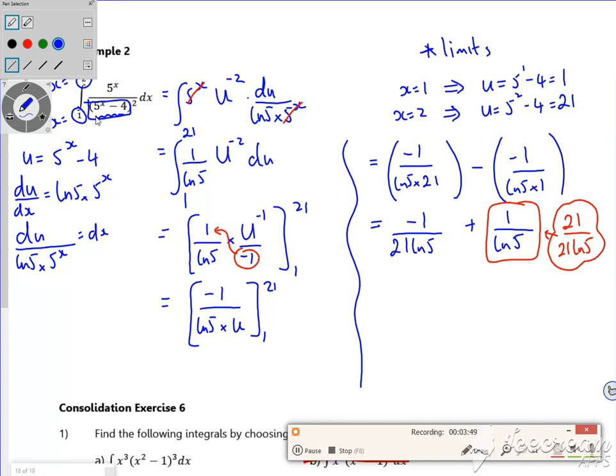So I've got a minus 1 lot of something plus 21 lots of something. So I've got 20 lots of something. 21 log 5.